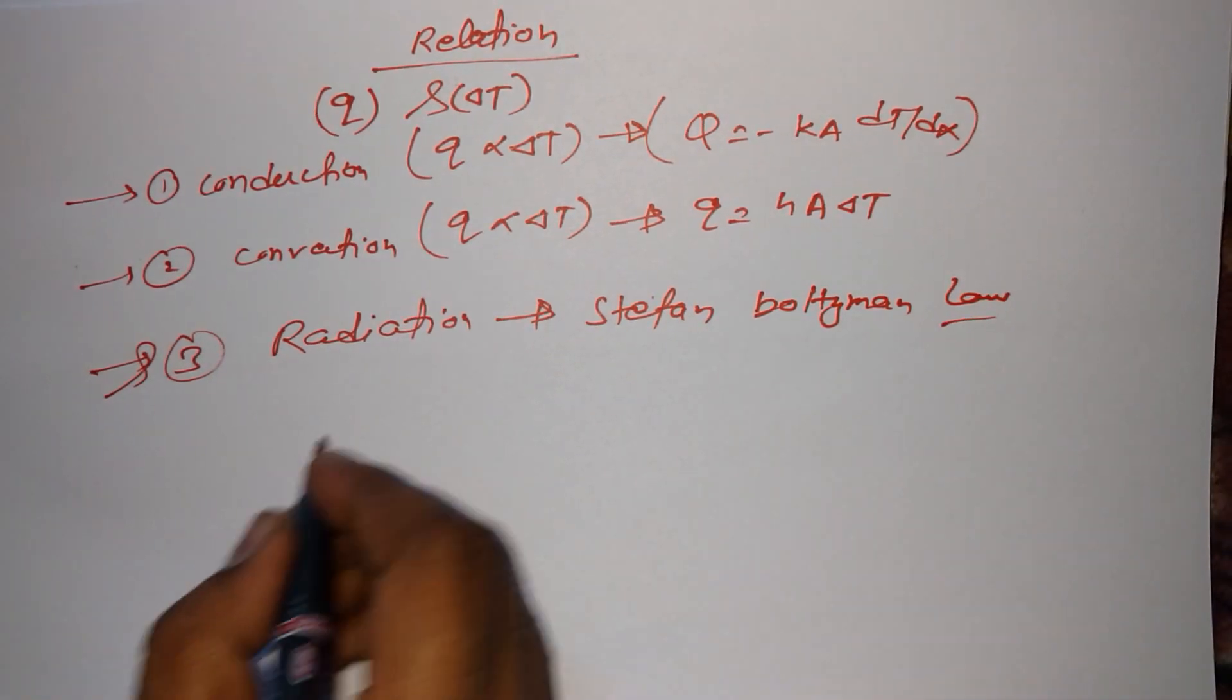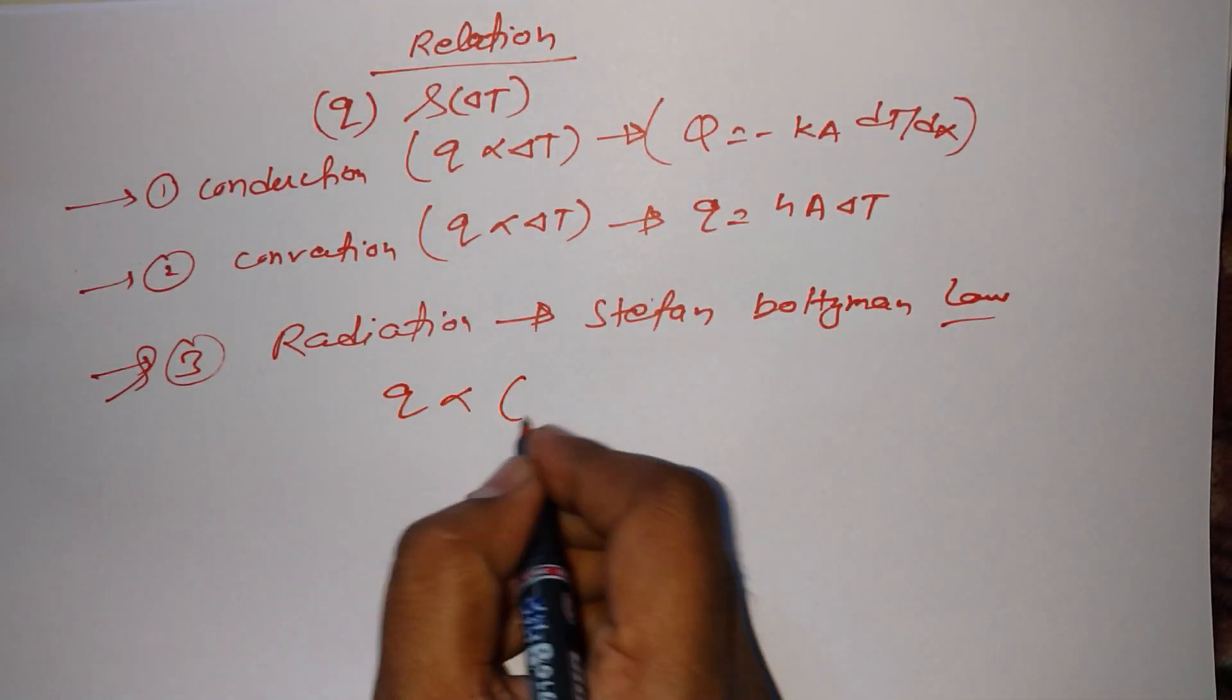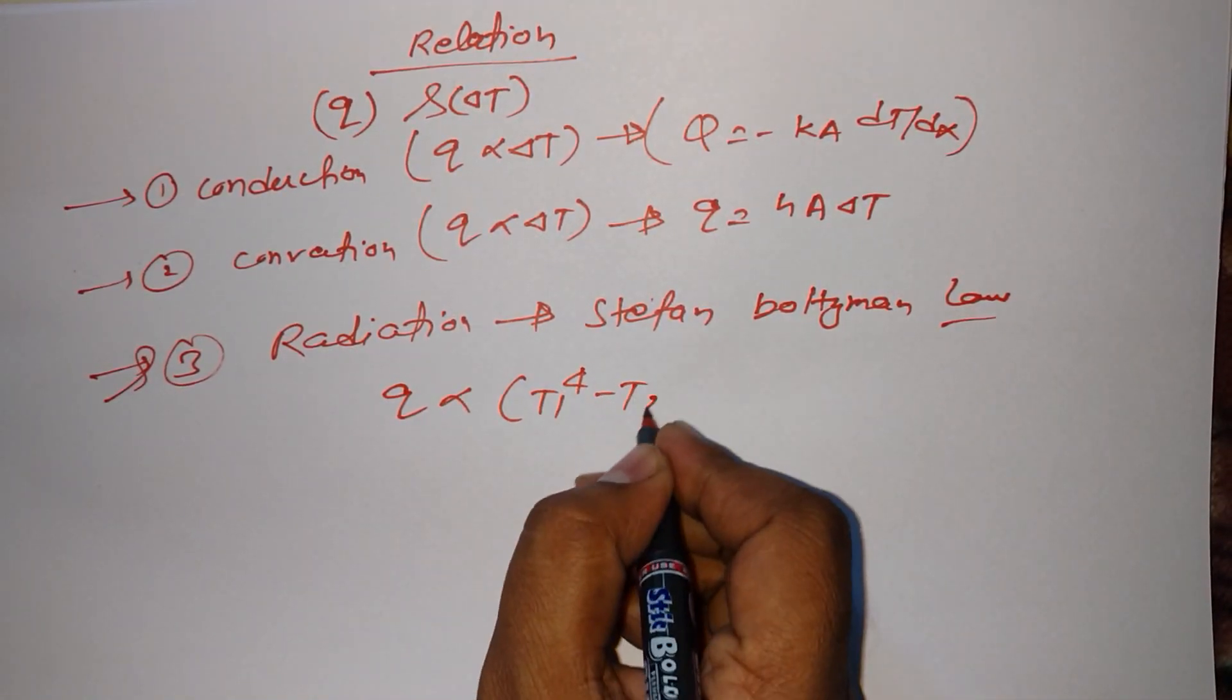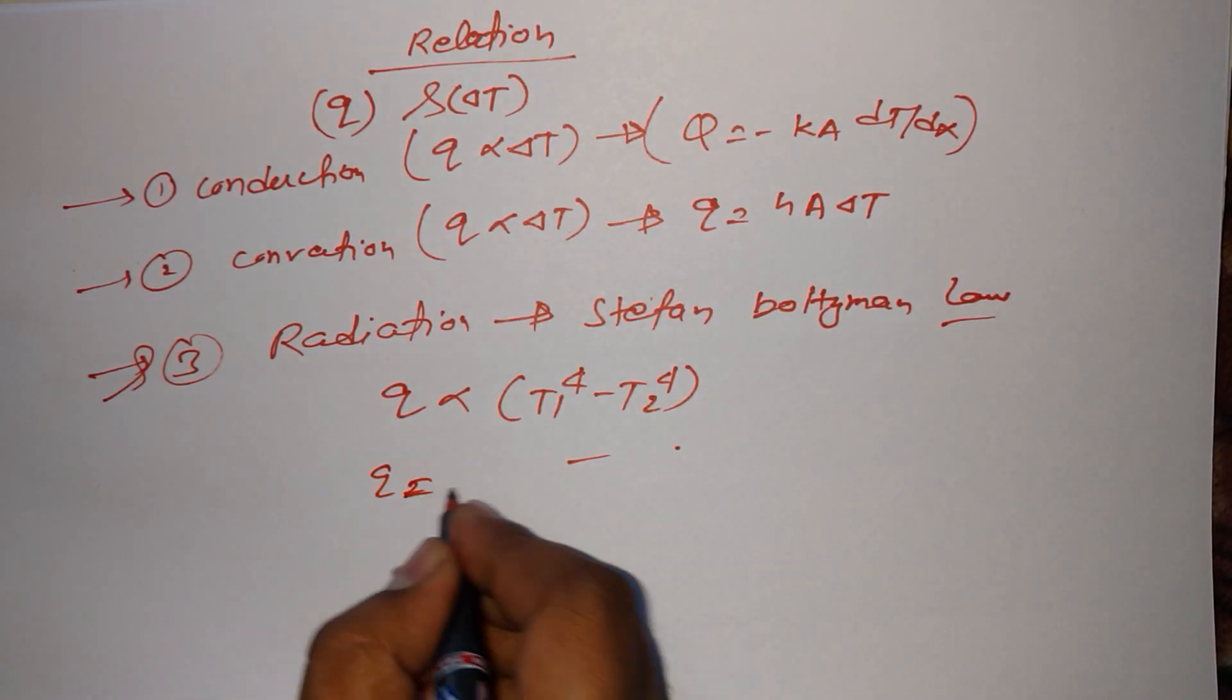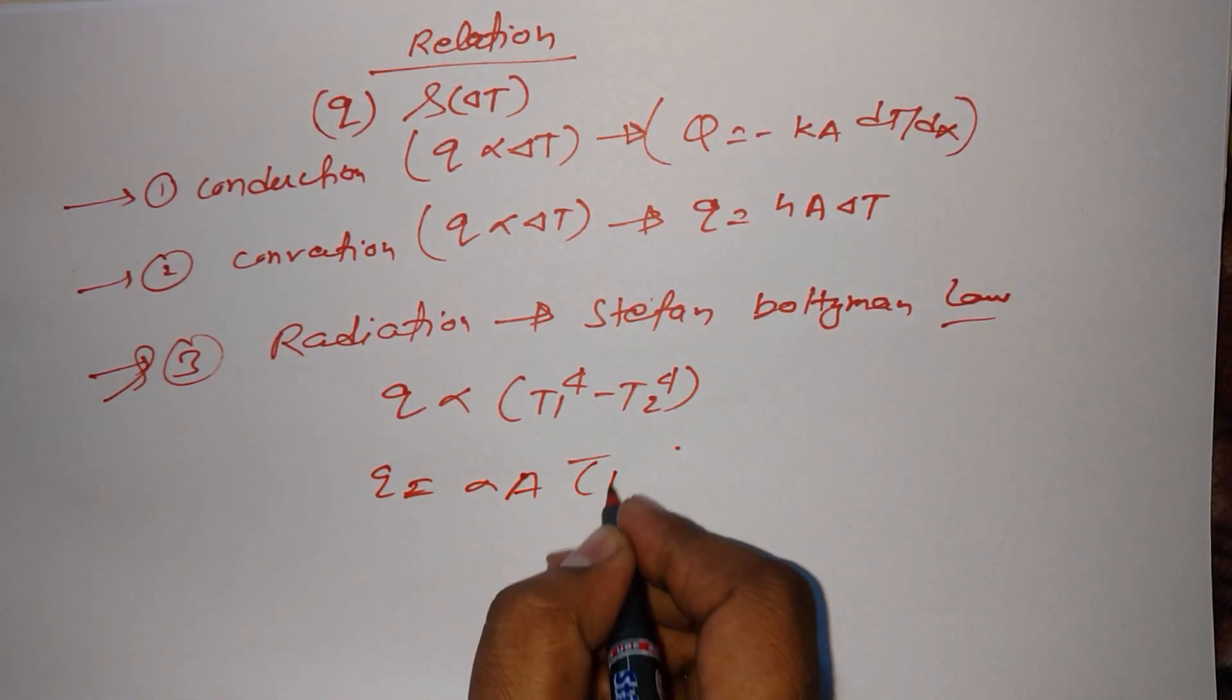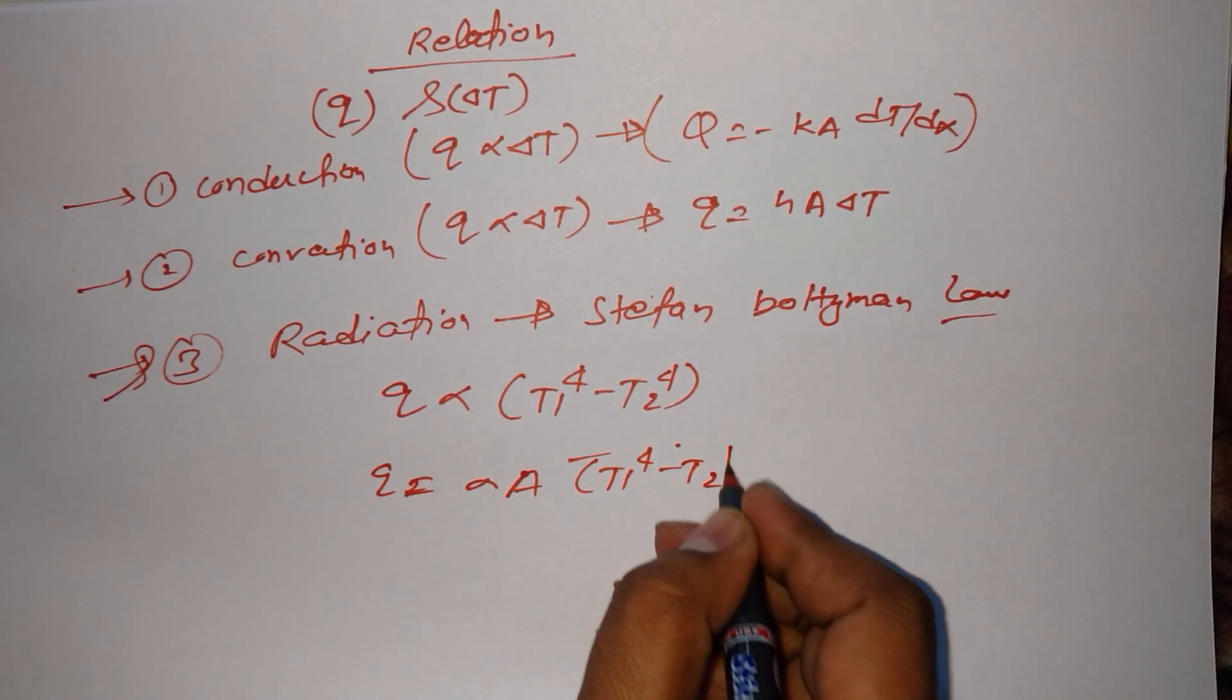According to this law, Q is directly proportional to T1 to the power 4 minus T2 to the power 4. That means Q equals sigma A times T1 to the power 4 minus T2 to the power 4. This is known as Boltzmann law.